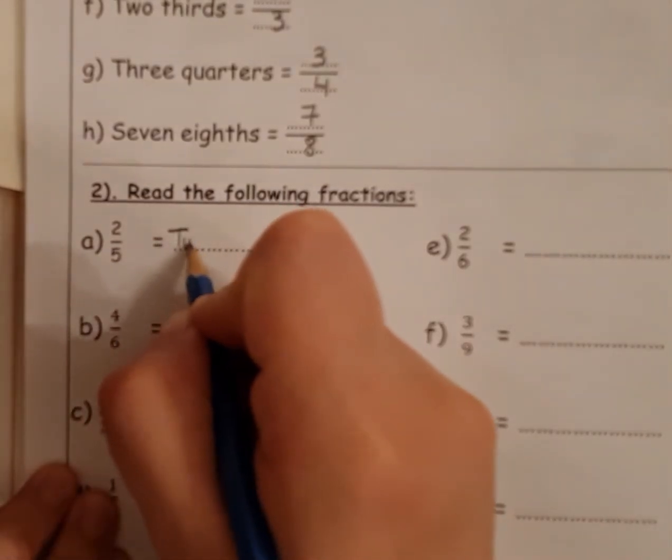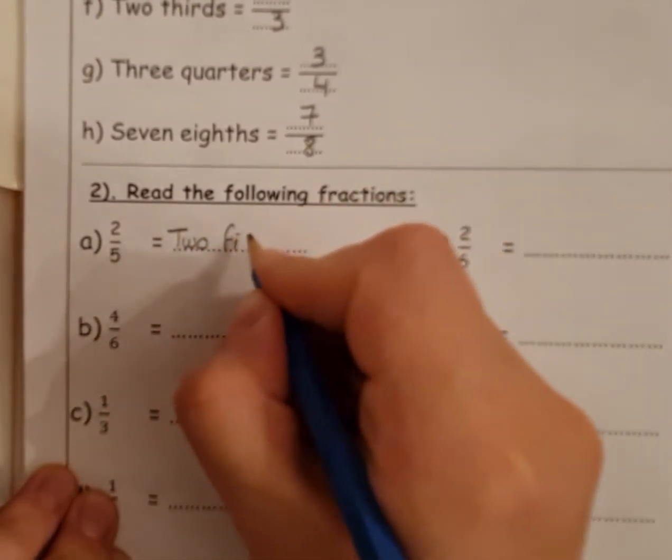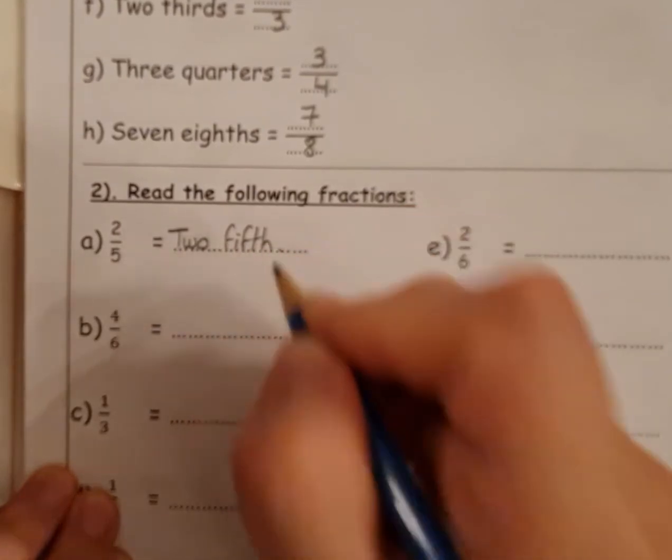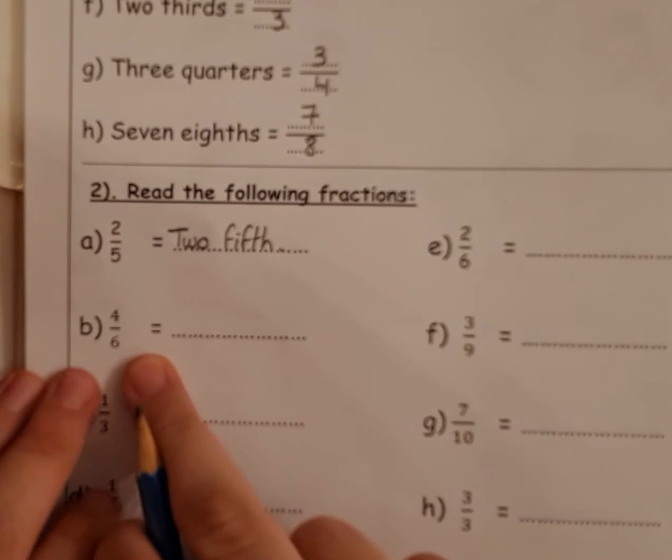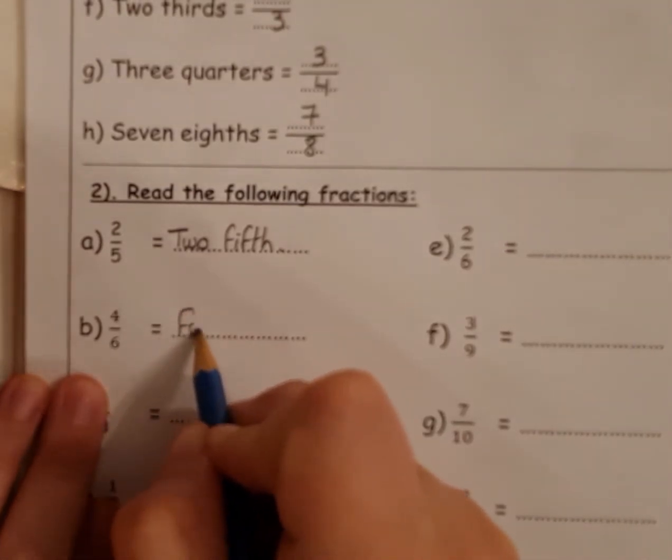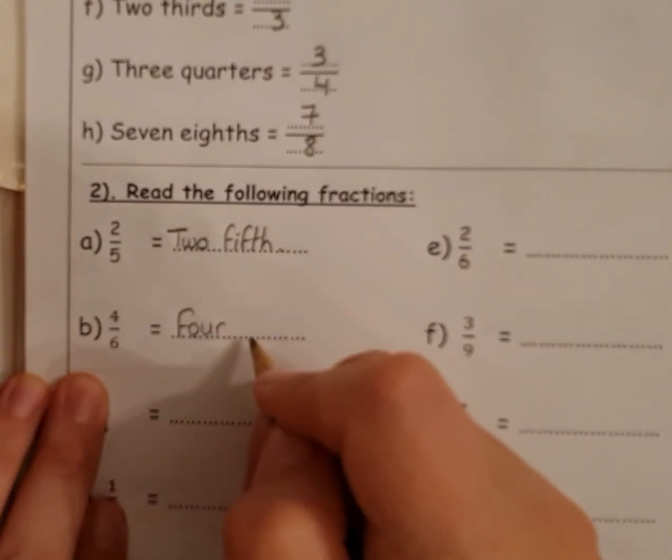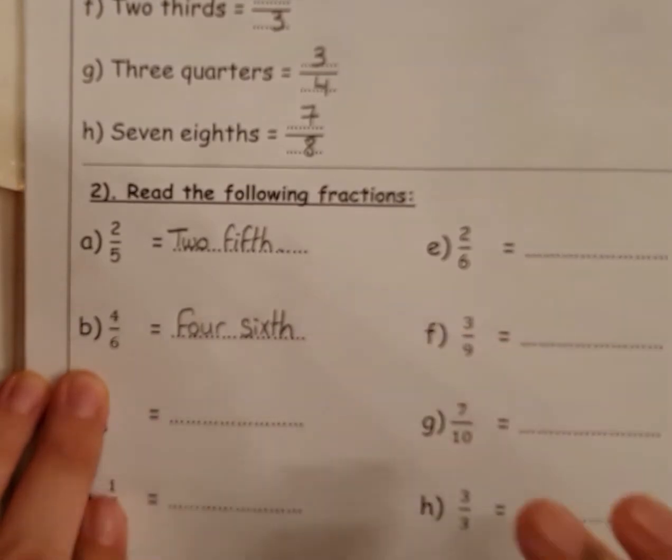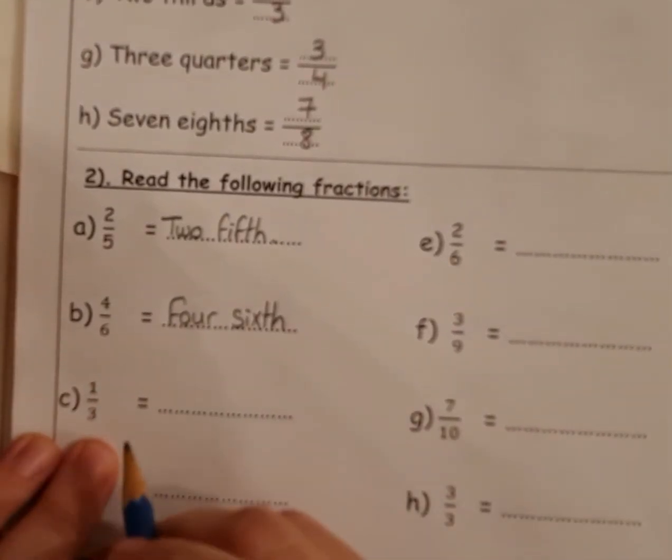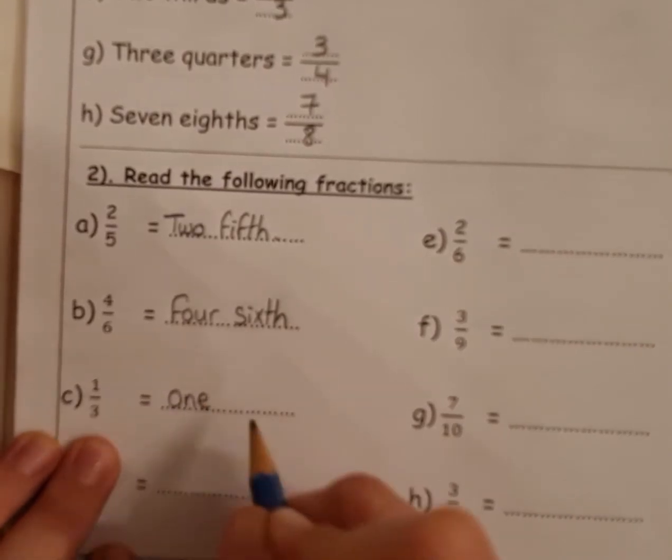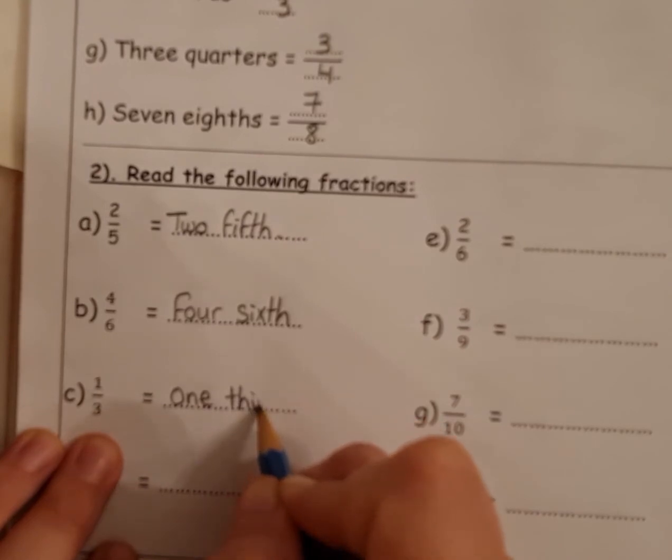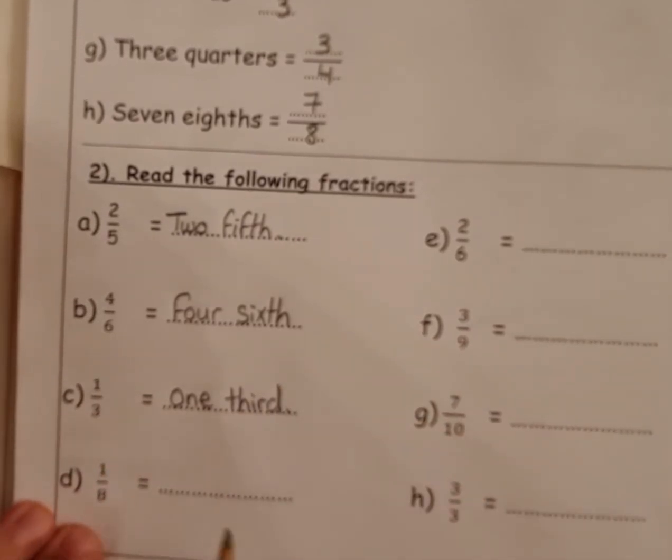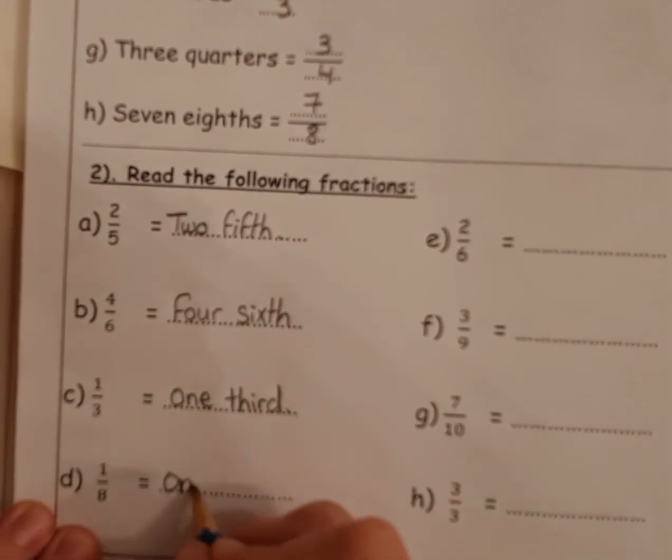Let's solve this part. Read the following fractions. Two over five means what? Two fifth. Second one, this is called what? Four sixth. I must add 'th', don't forget. One third. Third here. One eighth.